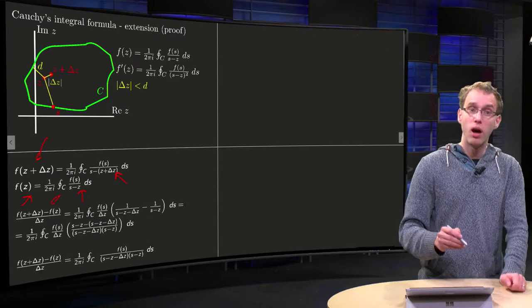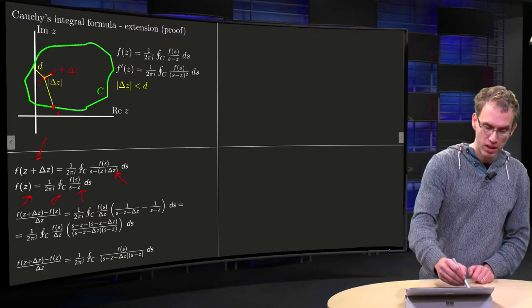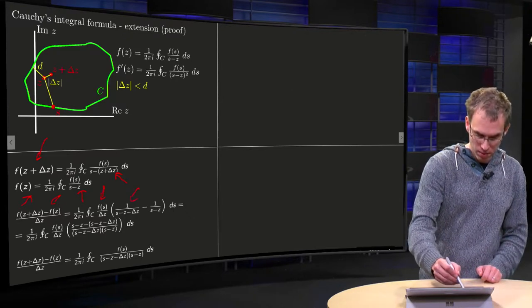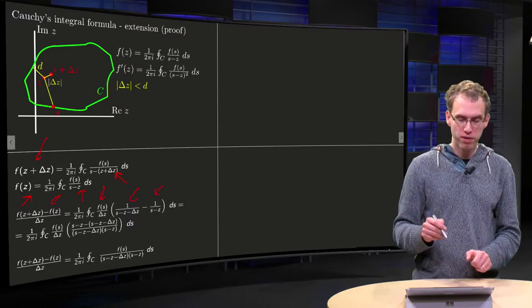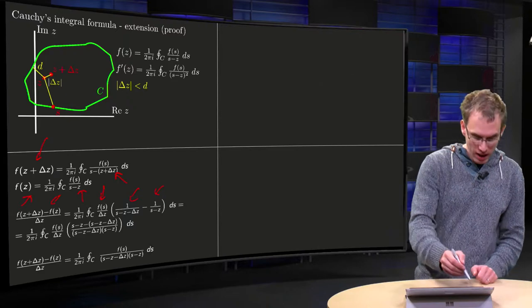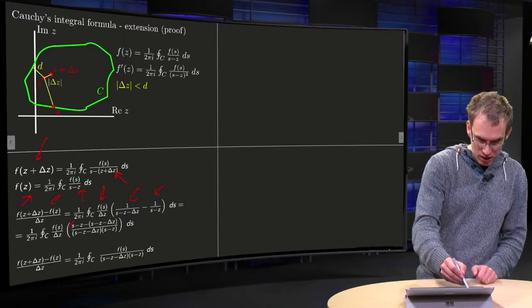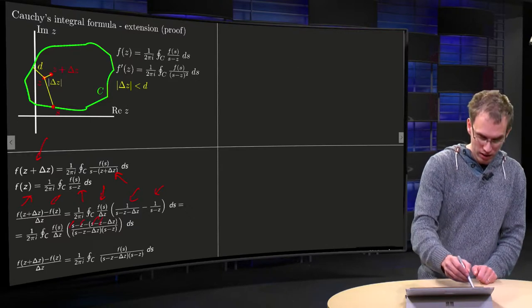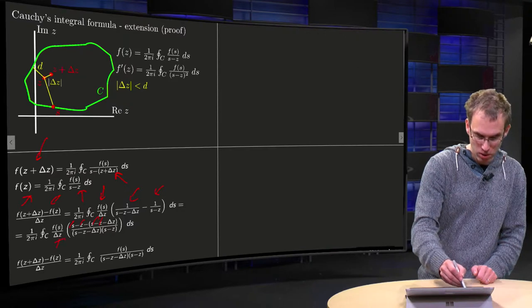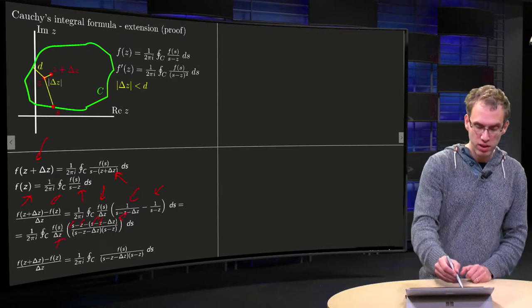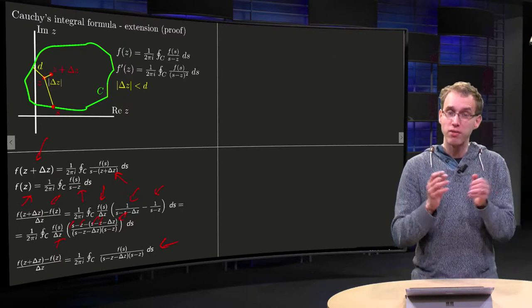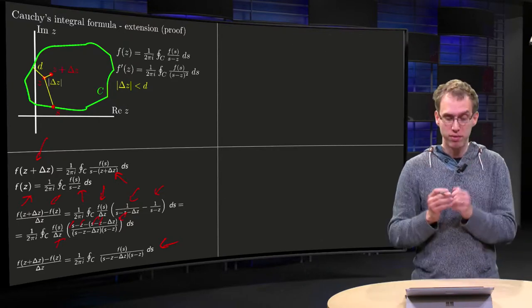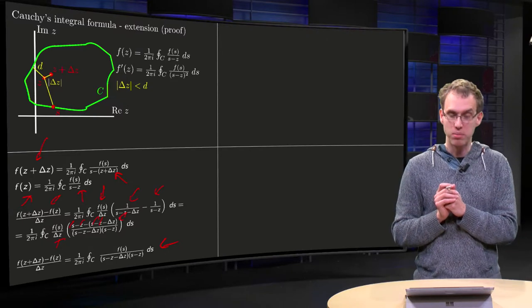And then we can take the difference and divide by delta z, so that's over here. You get 1 over 2 pi i of course, f of z over delta z, and this first part minus the second term. I can simplify of course, turn them into one fraction, and then you see that a lot of terms cancel out. The s minus s, the minus z plus z cancels out. So you're left is a plus delta z divided by delta z, so also those cancel out. So all you are left with is this formula over here. So f of z plus delta z minus f of z divided by delta z equals 1 over 2 pi i, and then integral f of z divided by s minus z minus delta z times s minus z.